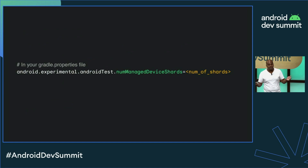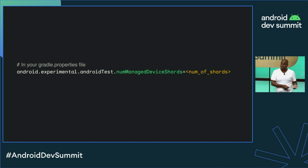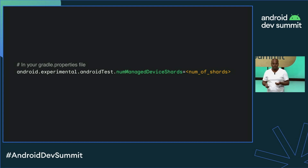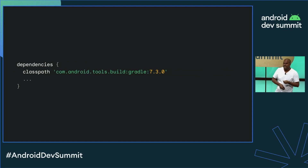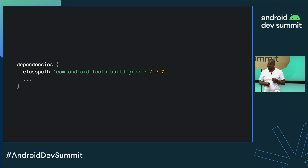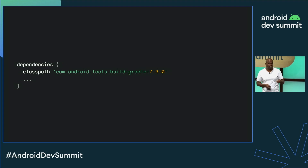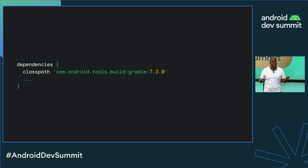With the additional resources that you're saving, you could either run on more device configurations, or use test sharding to execute your tests even faster. Gradle Managed Devices is stable in AGP 7.3, and 7.4 is in beta with further stability and performance improvements. We're continually improving the feature, so please give it a try and provide us feedback.